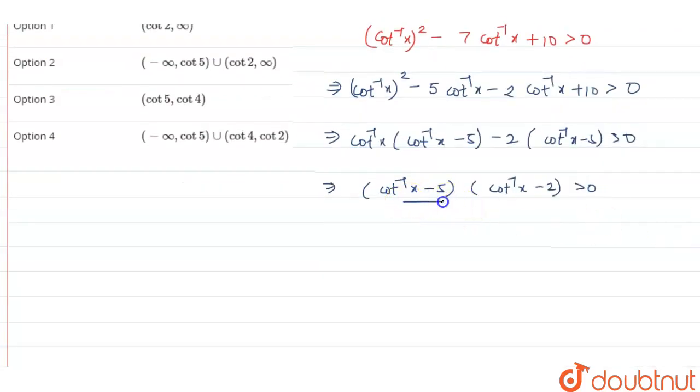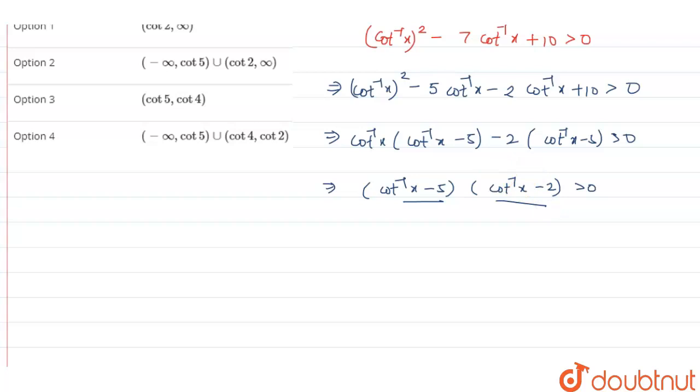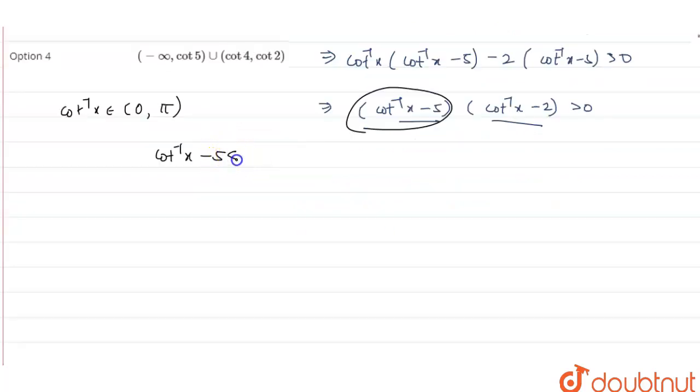Okay, so now the product of these two terms is positive. So that means either both terms are positive or both terms are negative. Since we know that cot⁻¹x lies between 0 to π, from here we can say that cot⁻¹x - 5 is strictly less than 0.